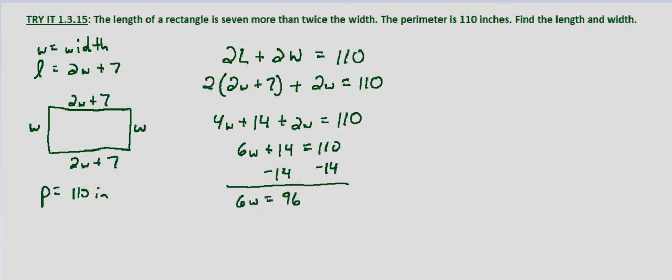We get 6W equals 96, 110 minus 14. Divide both sides by 6 and we get W equals 16 inches.